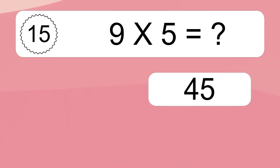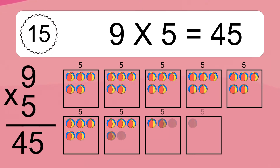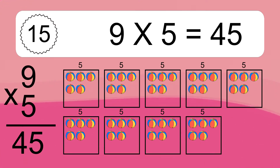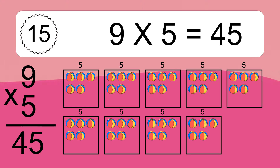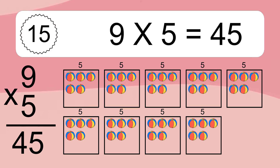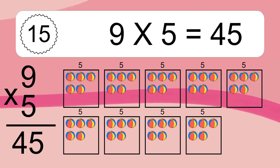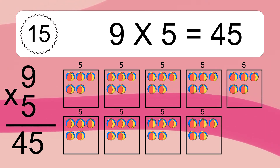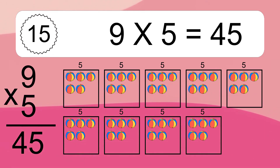9 times 5 equals what? 9 times 5 equals 45. We have 9 boxes, and each box has 5 colorful balls inside. If you count all the balls in all the boxes together, you will have 9 times 5 balls. This equals 45 balls.